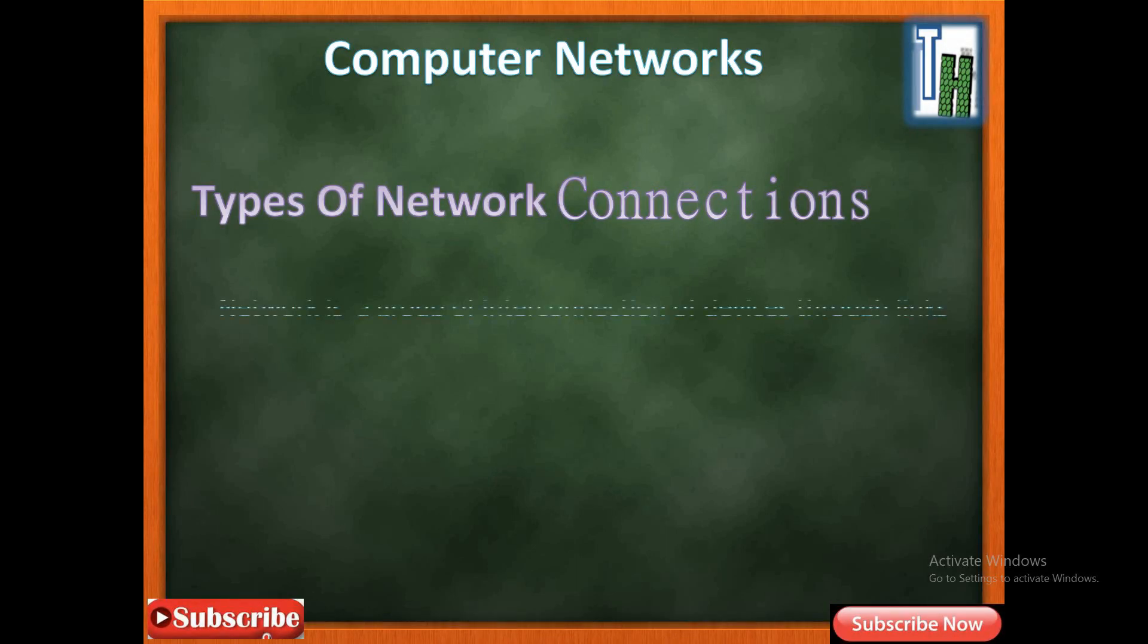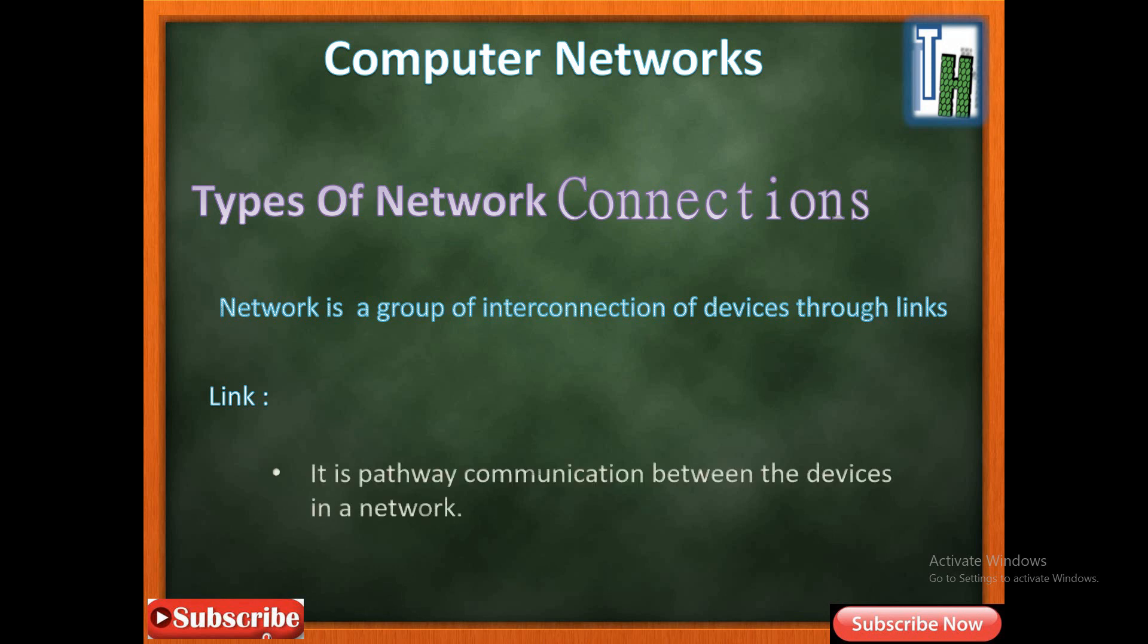In my previous video I told that a network is an interconnection of a group of devices. So in a network there are different types of devices connected together through a link. A link is nothing but a way that exists between the communication devices.